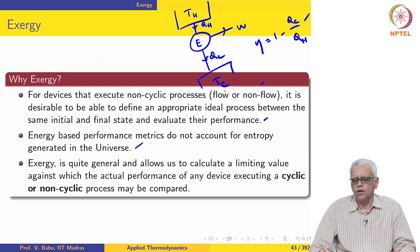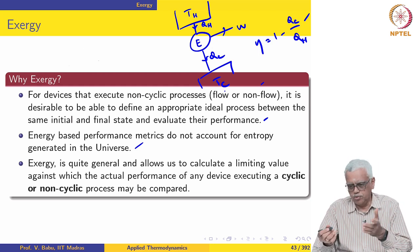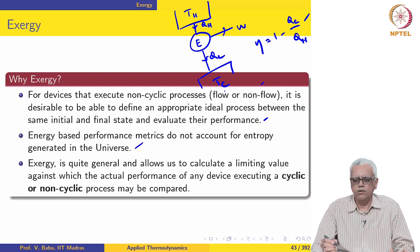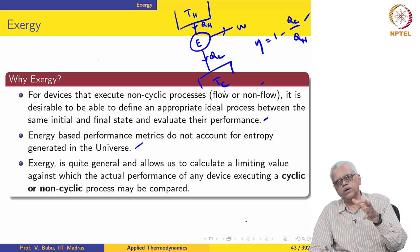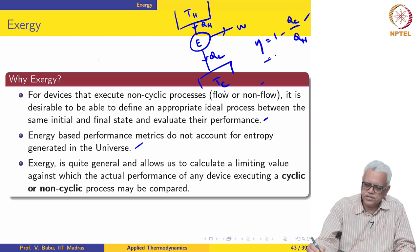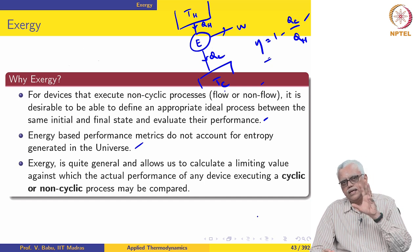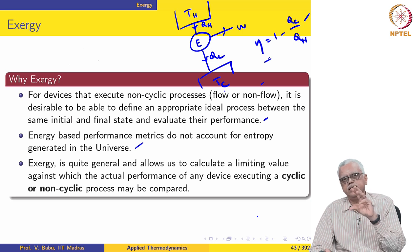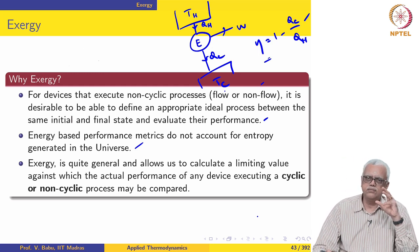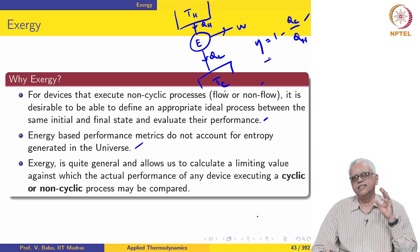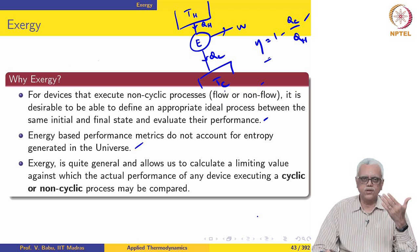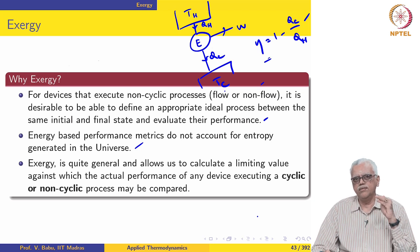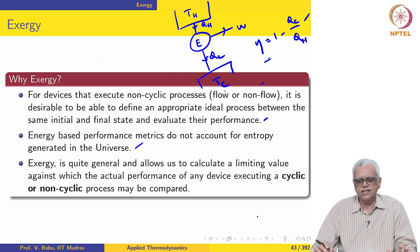Now consider two engines, both supplied with the same amount of heat QH and producing the same amount of work, rejecting the same amount of heat. However, one engine receives QH from a reservoir at 1400 Kelvin and the other from a reservoir at 800 or 1000 Kelvin. The efficiency for both engines would be the same. However, for the engine receiving heat from the higher-temperature reservoir, the amount of external irreversibility is higher. So although its energy-based efficiency is the same, there is more external irreversibility, pointing to the requirement that we need a metric which takes into account the entropy generated in the universe.